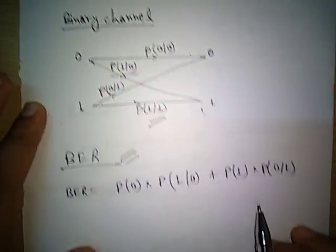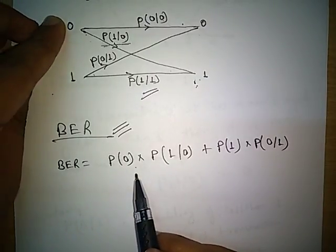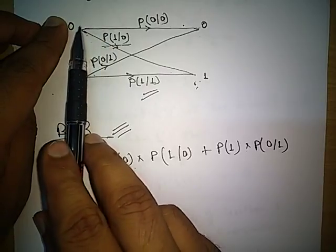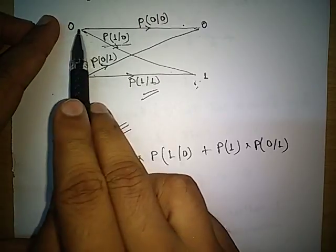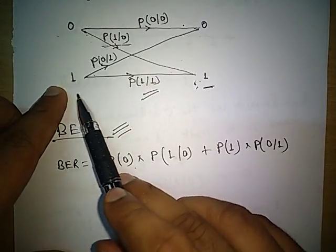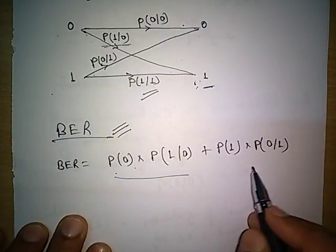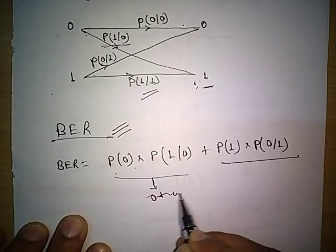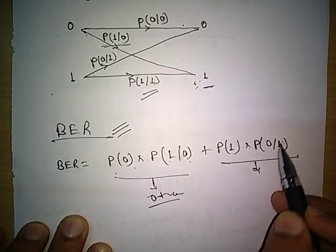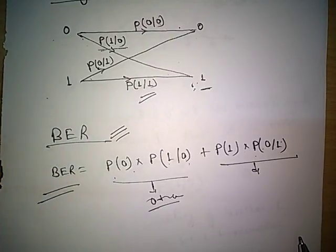The bit error rate deals with these error probabilities only. Bit error rate is: the probability of 0 transmission multiplied by the probability that the received signal will be in error, plus the probability of 1 transmission multiplied by the transition probability giving an error. So probability of 0 times P(1|0) plus probability of 1 times P(0|1) gives the overall bit error rate.